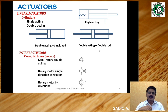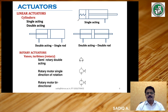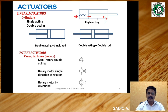Single acting and double acting are a classification for linear actuators. A single acting cylinder has power supply through one side of the cylinder only. There is a spring on the other side, so the reverse movement of the piston happens because of the spring. When control pressure is applied from one side, the piston moves against the spring load. When the pressure is released, the spring action brings it back to the original position. This is a single acting cylinder — power supply through one side only.